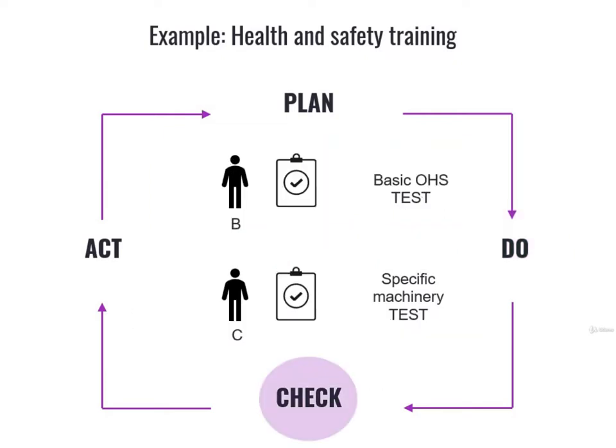Third step: Check. This step consists in checking if what you did was successful. After your company trained all your workers, you could ask yourself: was your training effective? You could make your workers take a test to check if they acquired all the main concepts of your lessons. That's what you can see in this slide. Worker B will take a test regarding basic OHS principles, and Worker C will take a test regarding the specifics of the machine that he has been trained for.